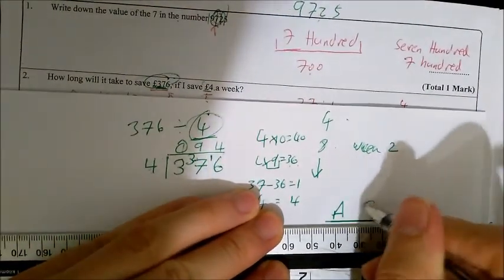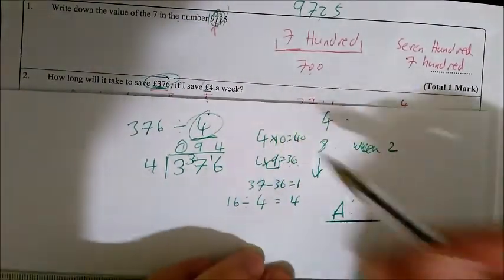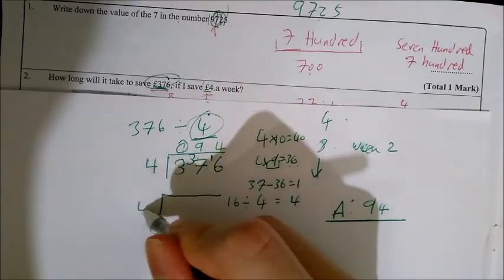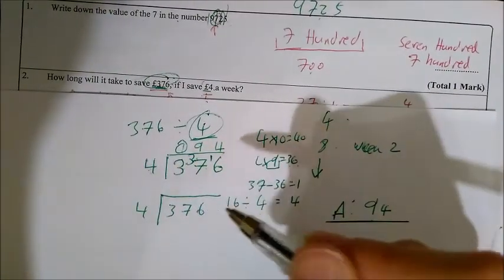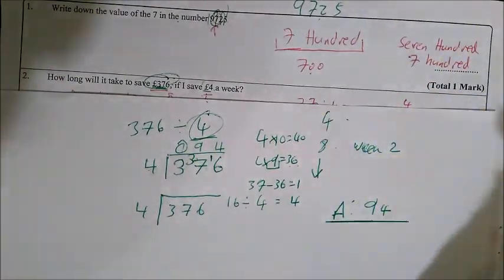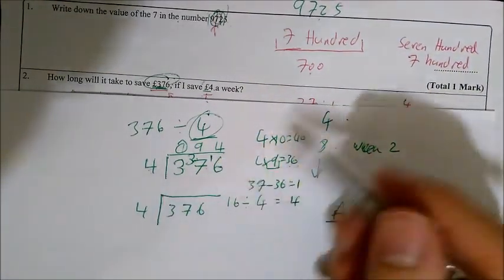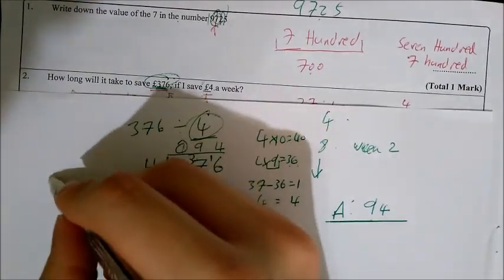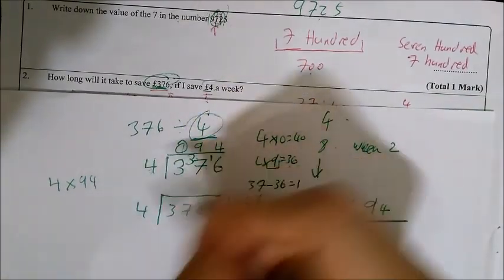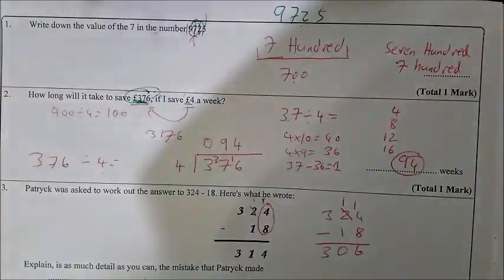A few people made mistakes here because they just put 96. So key thing to do here is to check your answer. Just make sure. Do it again if you want to. But when you check your answer or redo it if you have time, really just do it. Don't try and pretend you're doing it. You could also just do 4 times 94 if you wanted to check because if 4 times 94, it should equal 376.